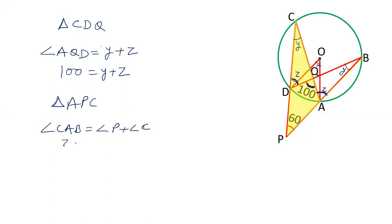Angle CAB is Z. Angle P is 60 degrees and angle C is Y. So Z equals 60 plus Y. Now this is the first equation. This is the second equation.